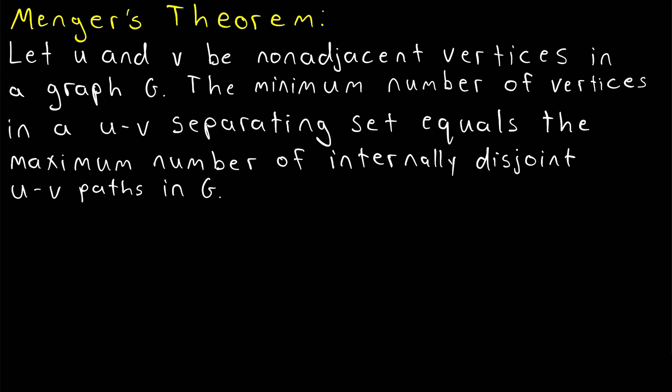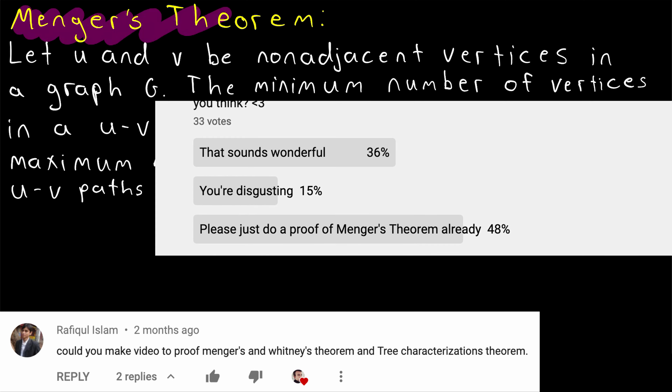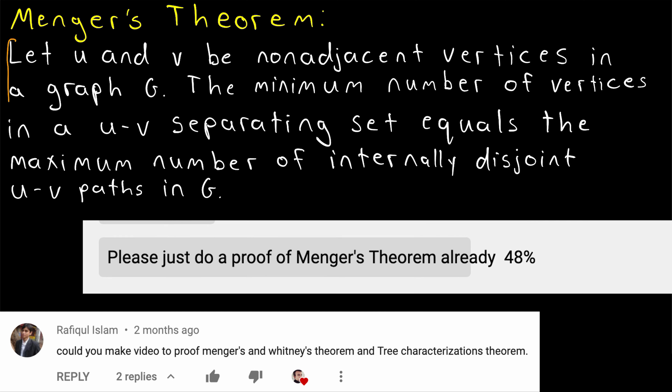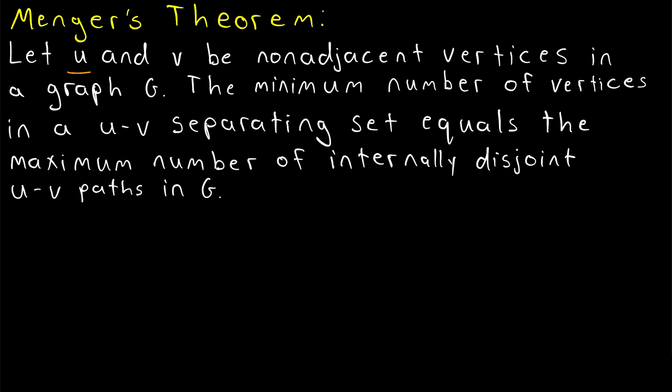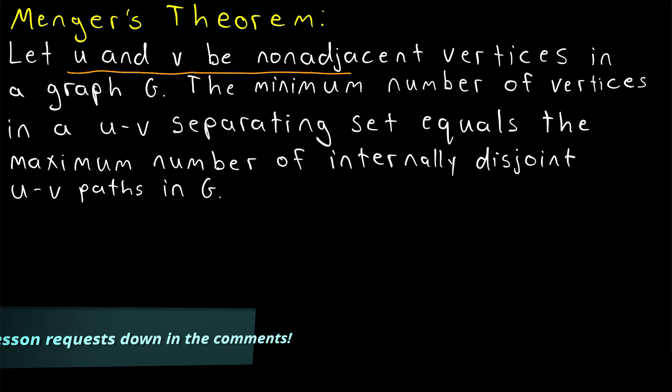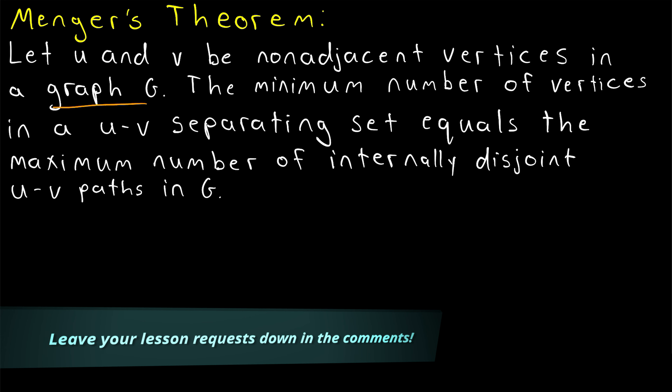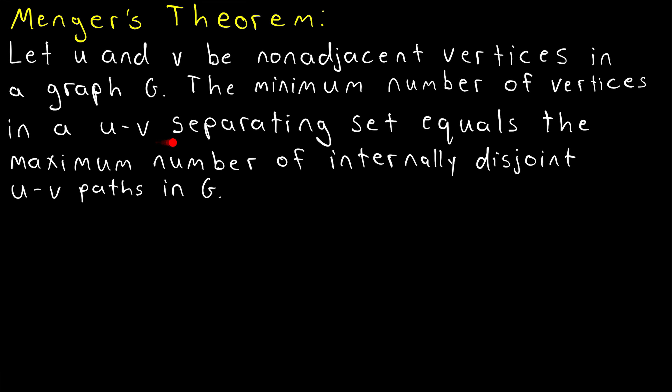My friends, at last, it is time. In today's Wrath of Math lesson, we are going to prove Menger's theorem. Let's quickly read through this statement of the theorem. Let u and v be two non-adjacent vertices in a graph G. Then the minimum number of vertices in a u-v separating set — that's the minimum number of vertices we need to delete to disconnect u and v — that minimum number is equal to the maximum number of internally disjoint u-v paths in the graph G.